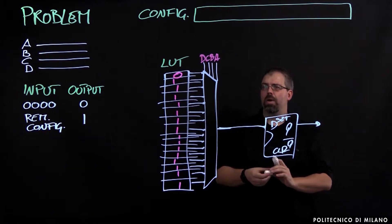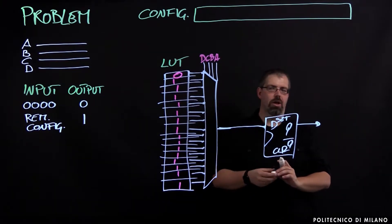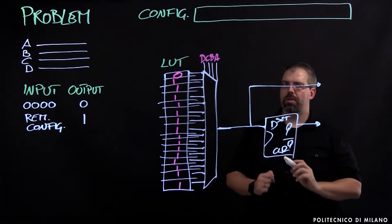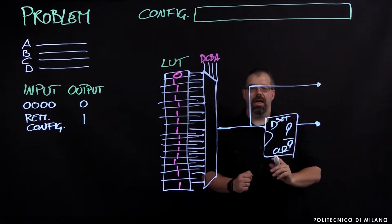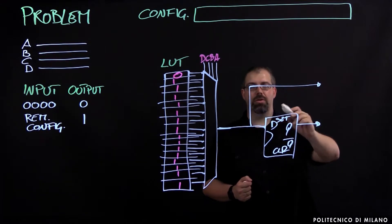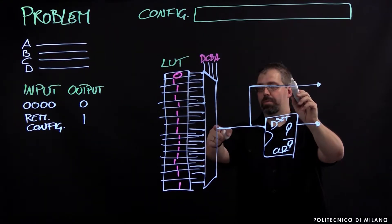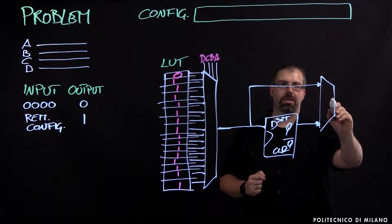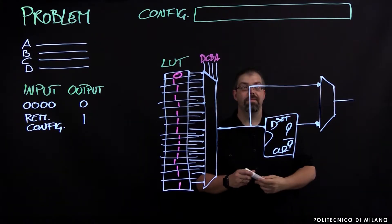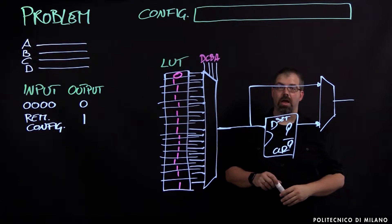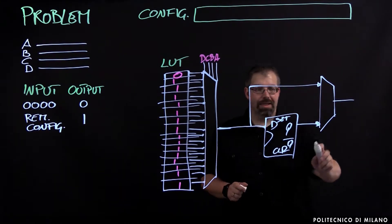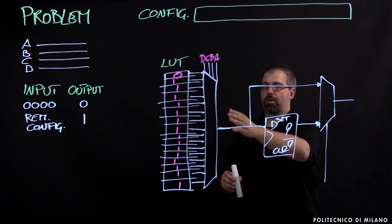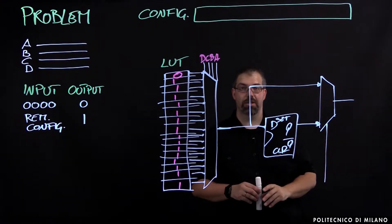But as we know, we may want combinational logic instead. So we may want not to use the register, and to do this we're going to have the output of the multiplexer directly connected to another multiplexer that sets the value of our output. By properly setting this multiplexer, we're going to have either combinational or sequential logic.